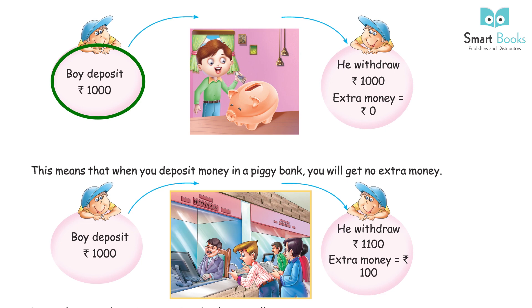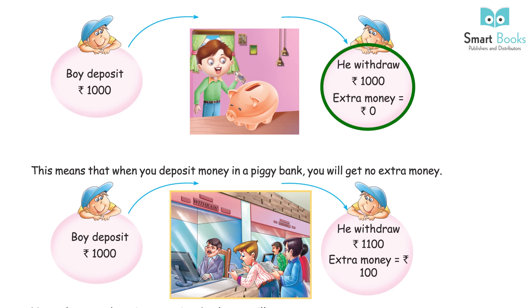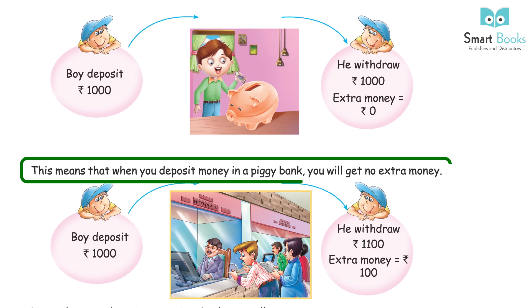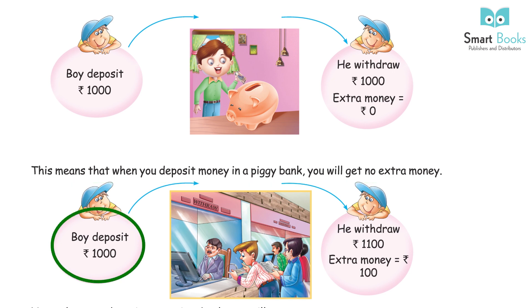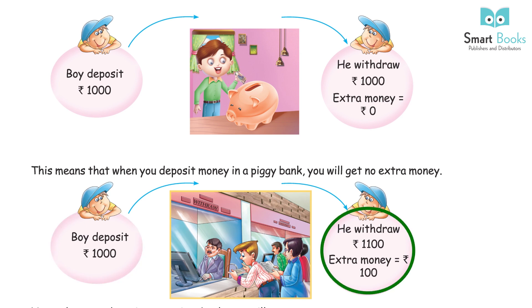If a boy deposits Rs 1,000 in a piggy bank and withdraws Rs 1,000, the extra money is 0. This means when you deposit money in a piggy bank, you get no extra money. But if a boy deposits Rs 1,000 in a bank and withdraws Rs 1,100, the extra money is Rs 100.